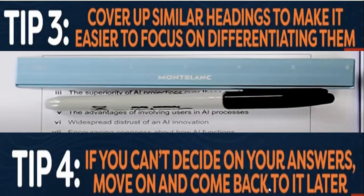Tip number four is: if you cannot decide on your answer, move on and come back to it later. You have 60 minutes for the reading module. Within those 60 minutes, you need to cover everything. There is no extra time for transferring answers to the answer sheet in the reading module. My best suggestion is to write your answers directly on the answer sheet as you go, using a pencil so you can correct it later when rechecking.